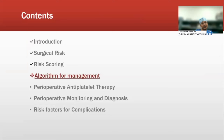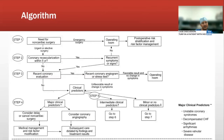The algorithm for management is the main focus for the approach of the patient for non-cardiac procedures. Once non-cardiac surgery is decided, we assess whether it is emergency or elective. In an emergency, the patient proceeds with perioperative risk stratification and risk factor management. In non-emergency cases, we assess whether the patient has had coronary revascularization within the last five years, and whether new symptoms have occurred since then.